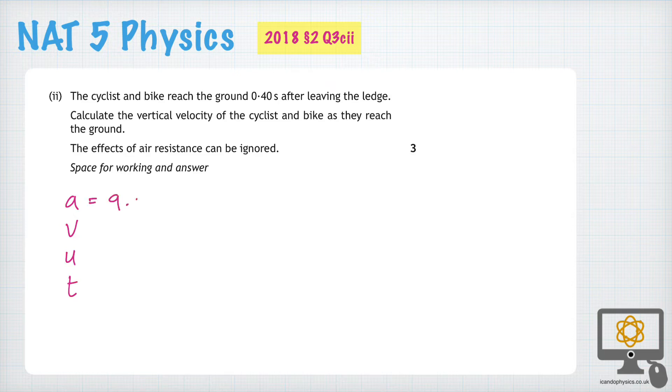The acceleration of the bicycle is 9.8 metres per second squared. The final velocity is what we're trying to find out. That's the vertical velocity. The initial vertical velocity is 0. We were told the horizontal velocity in the question, that's not relevant.